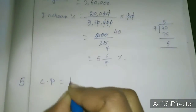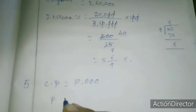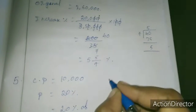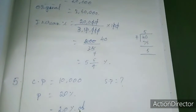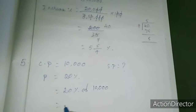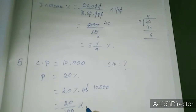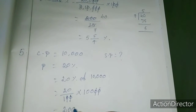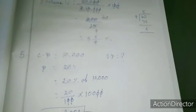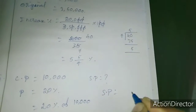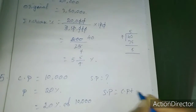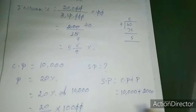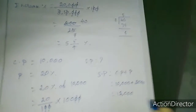Cost price is 10,000. Profit is 20% of 10,000, which equals 2,000. So the selling price is cost price plus profit: 10,000 plus 2,000 equals 12,000. The selling price is 12,000. This is the answer for the 5th sum.